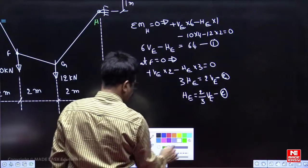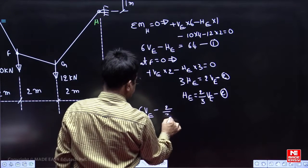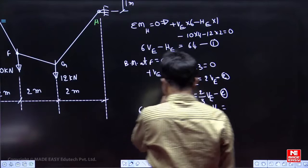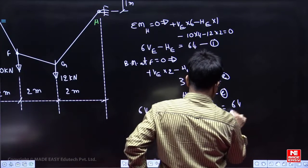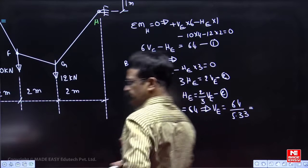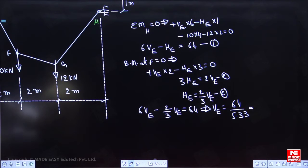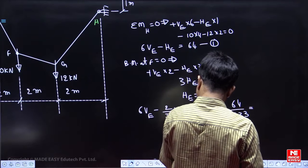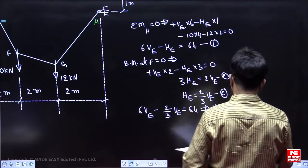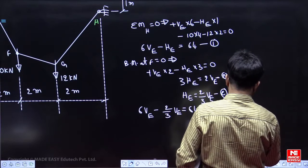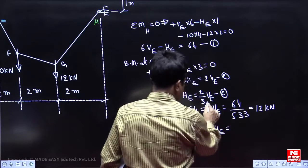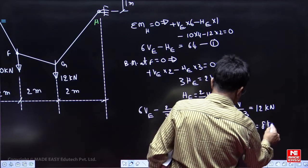Now substitute that value here. 6VE minus HE means 2/3 VE is equal to 64. So, from this you will get VE. So, 2/3 means 0.67, 5.33, 64 by 5.33. So, VE you will get 12 kilonewton. VE is 12. Now, from this HE also you will get. HE is equal to 2/3 of 12, 8 kilonewton.